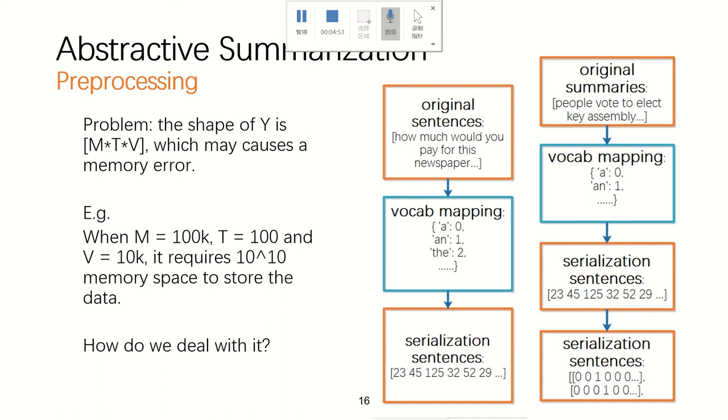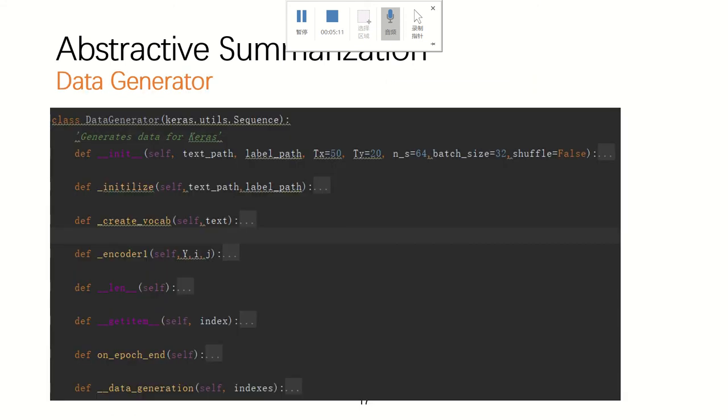The M is the size of the dataset and the T is the sentence lines and the V is the size of the vocabulary. So if we have a very large dataset, maybe we will cause a memory error. So our solution is building our own data generator. The data generator can produce batch size of data instead of reading and processing all data in one time. So it can save a lot of memory.